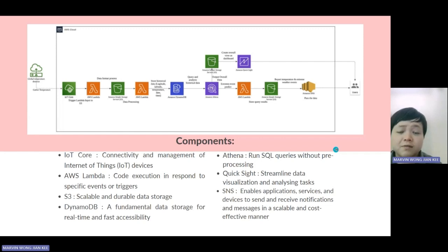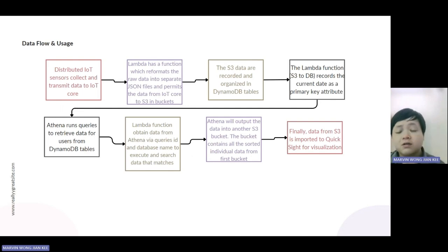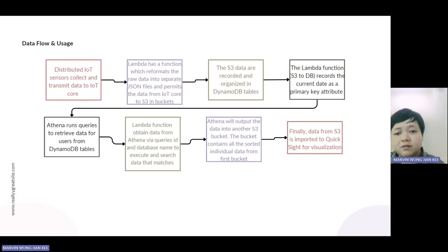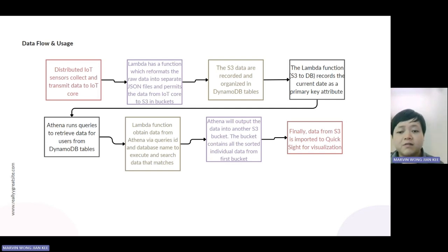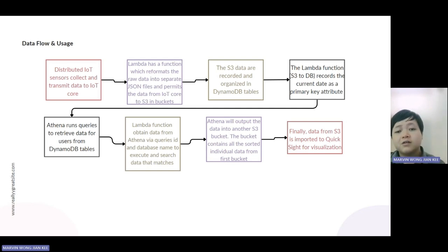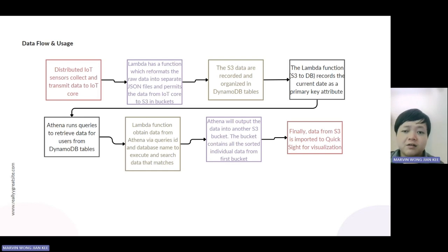For the data flow of the diagram: first, the distributed IoT sensors will collect data and transmit it to the IoT Core. Second, Lambda generates a function which reformats the raw data into separate JSON files and allows data transfer from IoT Core into S3 buckets. Next, the S3 data inside the buckets is recorded and reorganized into DynamoDB tables. The Lambda function from S3 to DynamoDB records the current date as a timestamp and as a primary key attribute. Next, AWS Athena runs queries to retrieve data from DynamoDB tables and to help predict extreme weather events.